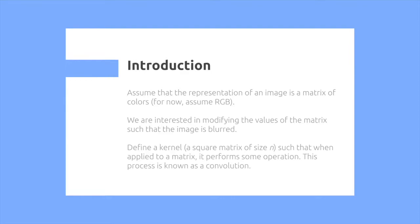We can define a kernel, a square matrix of size n, such that when applied to a matrix, it performs some operation. This process is known as convolution.